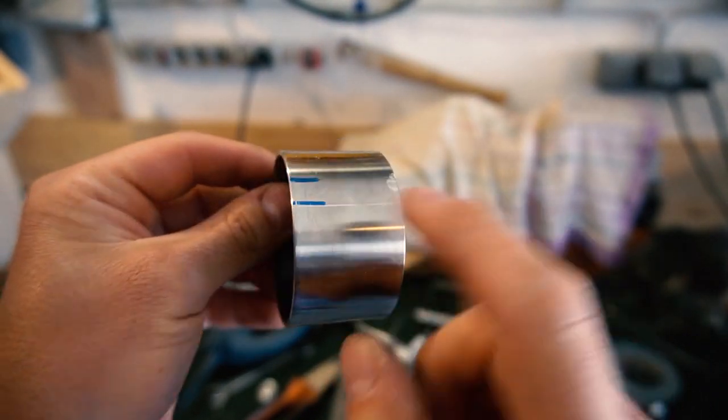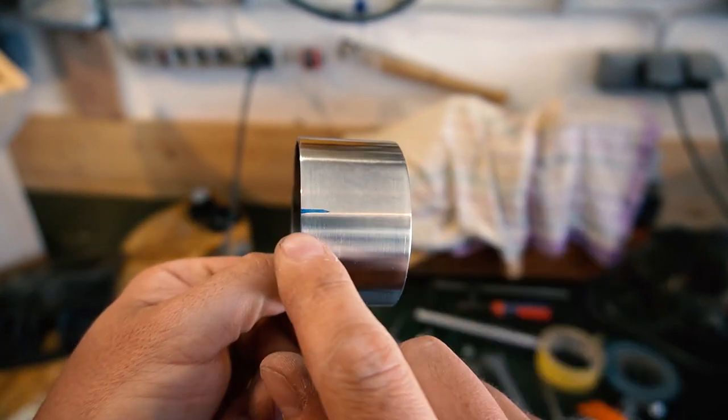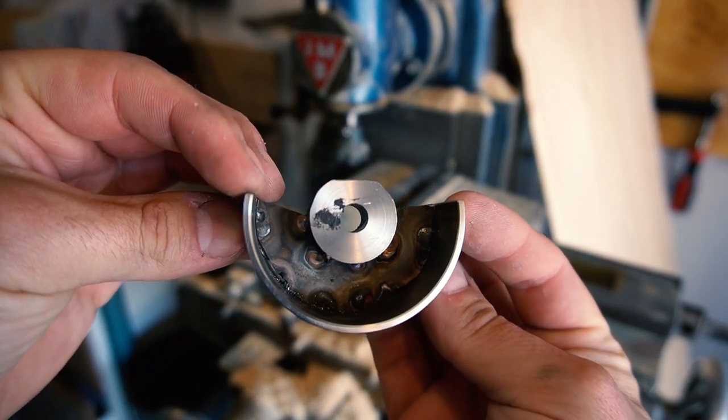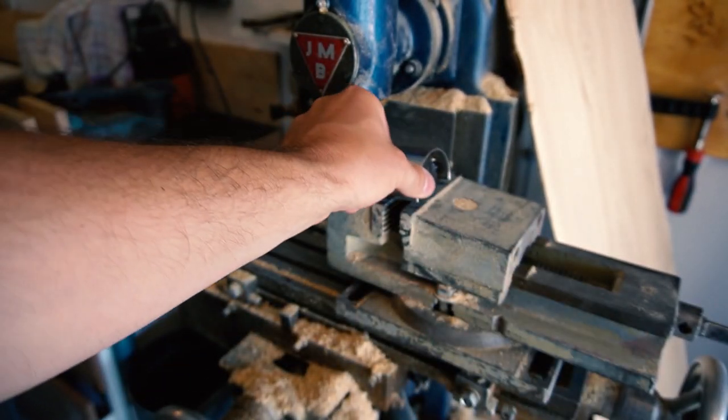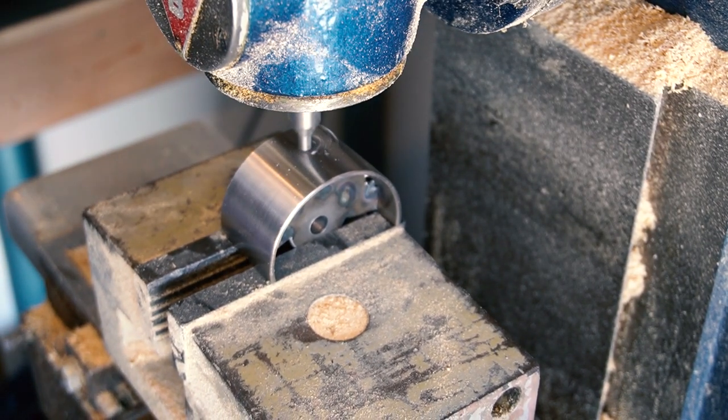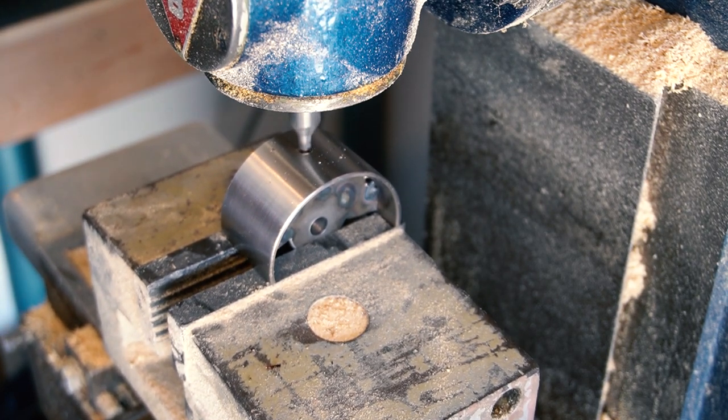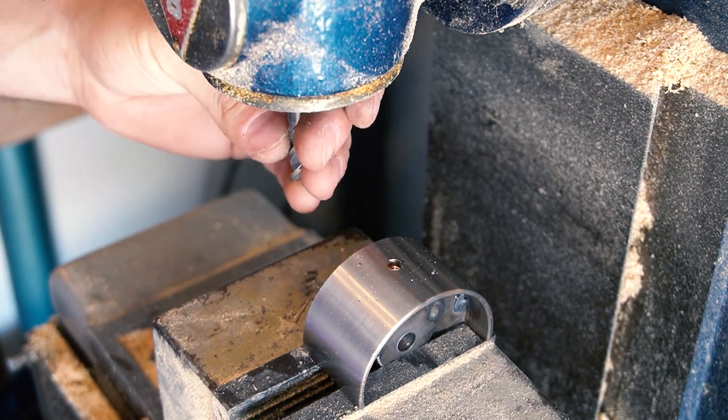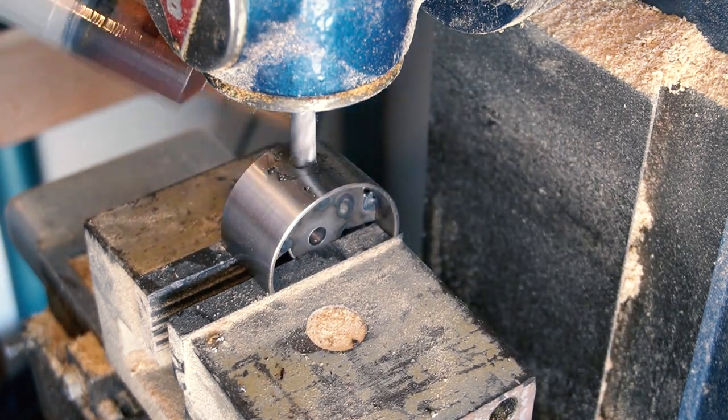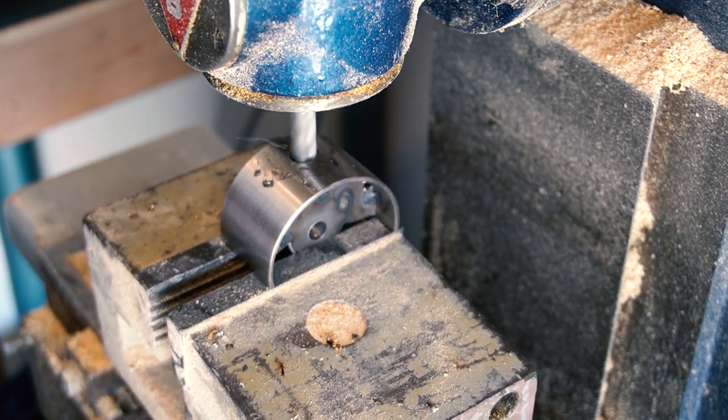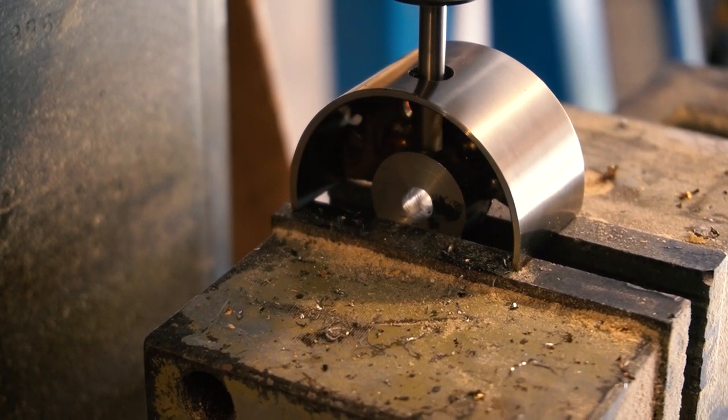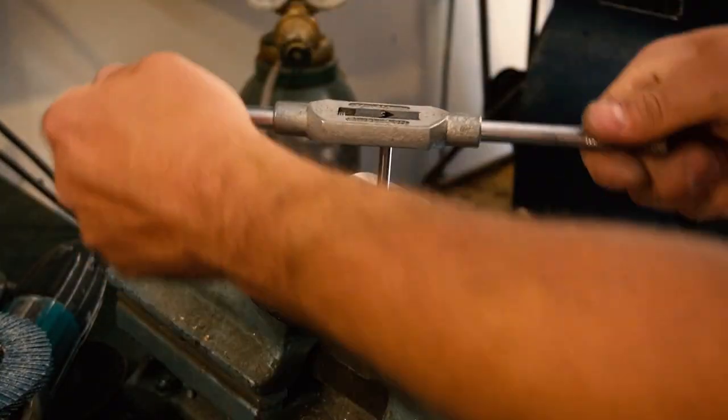Now I need to cut it here and here. Now I need to drill a hole for the control lever. This is the hole where the control lever will be screwed into, I just need to tap the thread.